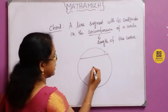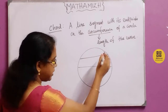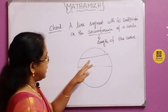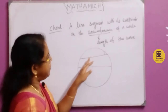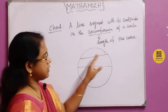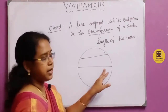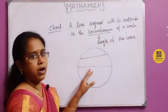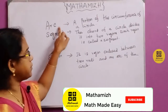A chord is a line segment that connects two points on the circle. They only have to touch the two points on the circle. The longest chord is the diameter.